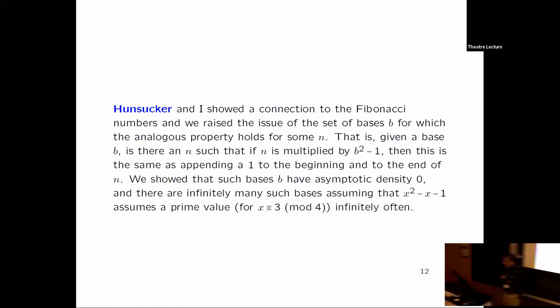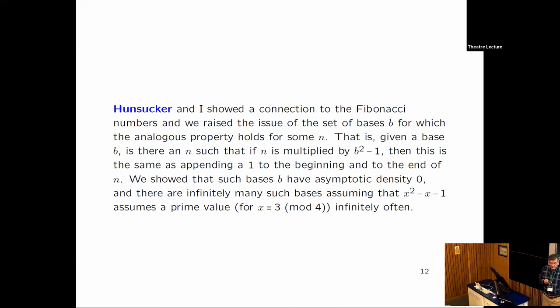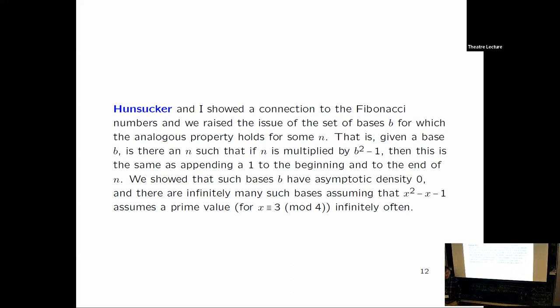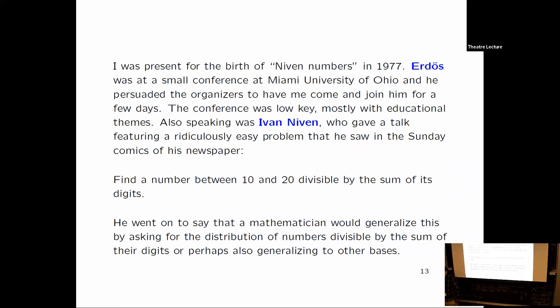So almost no numbers have this property. Next up, you could ask, almost no bases have this property, are there infinitely many bases that do have the property? And we couldn't prove it, so that's an unsolved problem. Prove that there are infinitely many bases B with this so-called interesting property. And we were able to prove that if there's a number that's 3 mod 4 such that x squared minus x minus 1 is prime, then there is a corresponding base. So you can look up our paper. And if you write the paper and cite us, that'll be the first citation that paper's ever had.